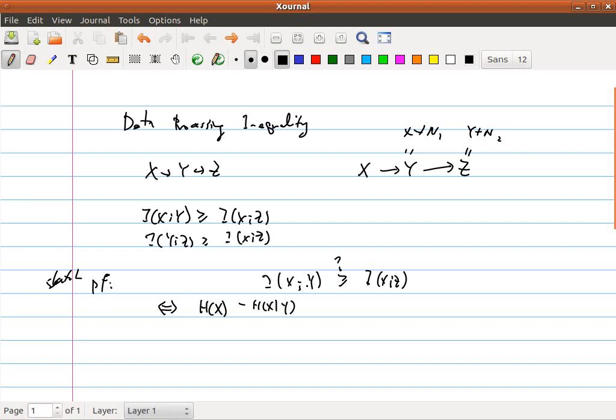We expand mutual information into a difference between the entropy and conditional entropy. It's bigger than or equal to H(x) - H(x|z). If this holds, then basically this holds.